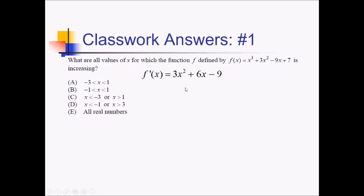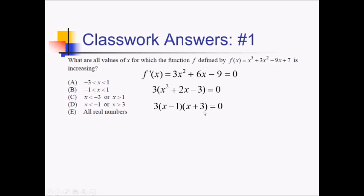So we need to figure out where this thing equals 0. We can start by factoring a 3 out of everything. That'll leave us with x squared plus 2x minus 3 inside the parentheses, which we can then factor into two things that multiply to negative 3 and add up to 2 — that'd be negative 1 and positive 3. So this is going to be true at x equals 1 and x equals negative 3.